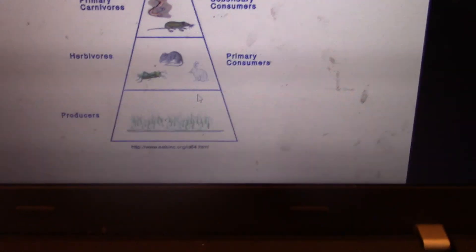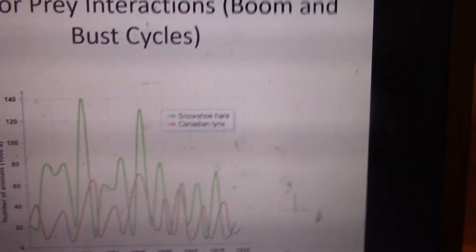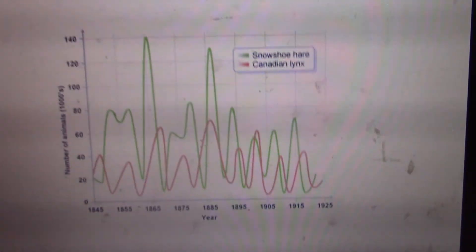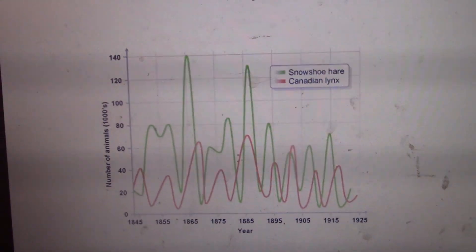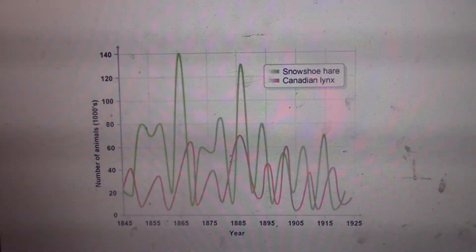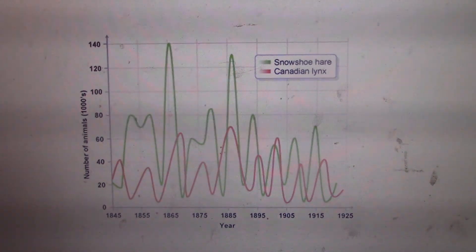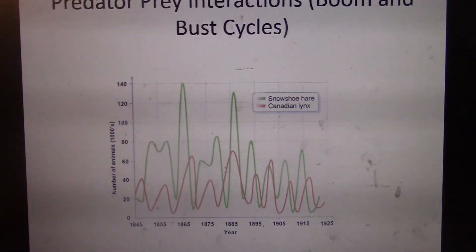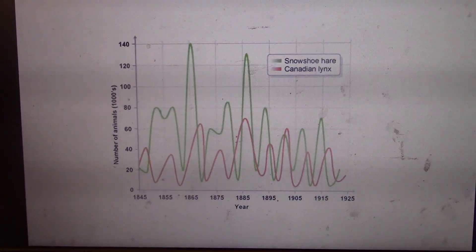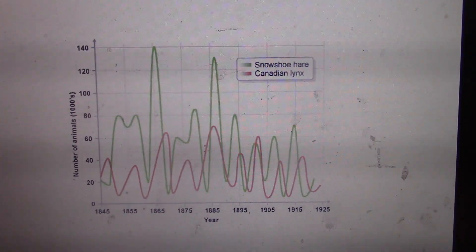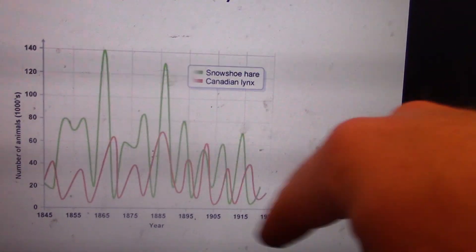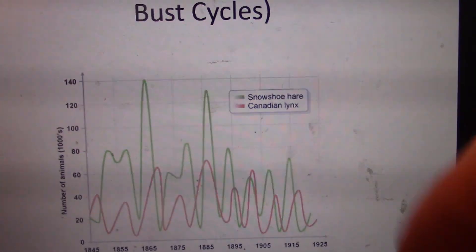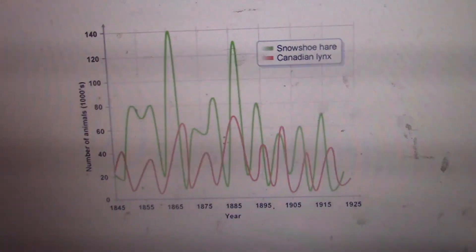This predator-prey cycle is shown in your slides. The Hudson's Bay Company has done a really good job mapping pelts throughout its entire history — it's interesting that some of our best ecological information comes from a colonial fur trading corporation. They keep tabs with their biologists on snowshoe hare and Canadian lynx populations. You can see a cyclical relationship: lynx are highly specialized for consuming snowshoe hares, and snowshoe hares are highly adapted to avoid lynx.